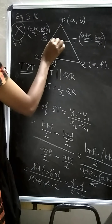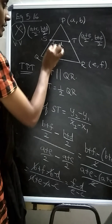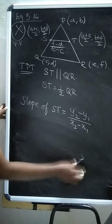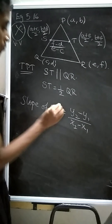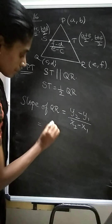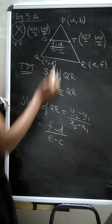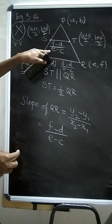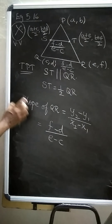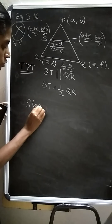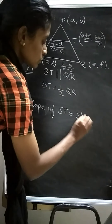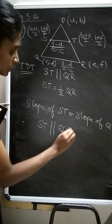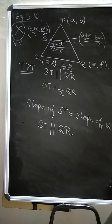Now slope of QR: substituting Q = (c, d) and R = (e, f) into the slope formula gives (f−d)/(e−c). Since slope of ST = slope of QR = (f−d)/(e−c), therefore ST is parallel to QR. So we have proved the first condition.